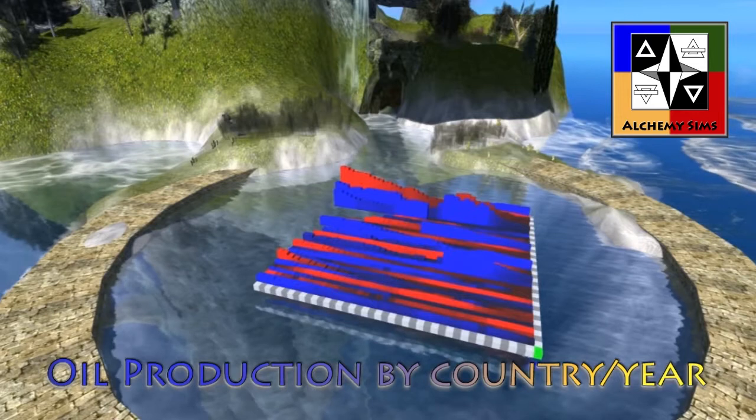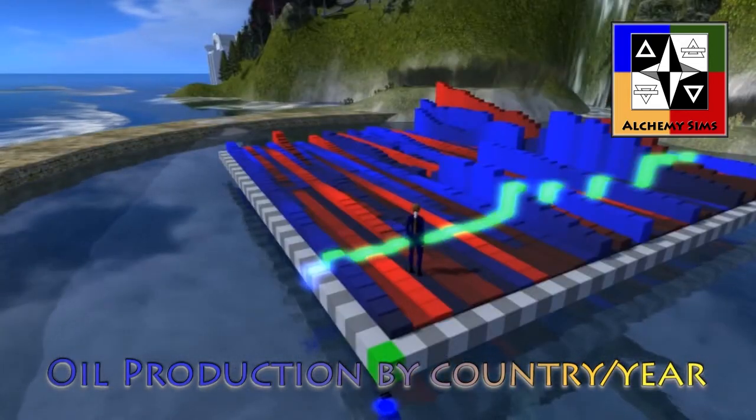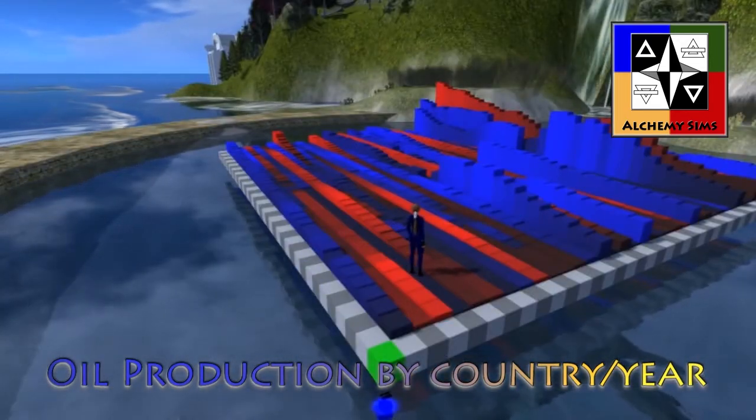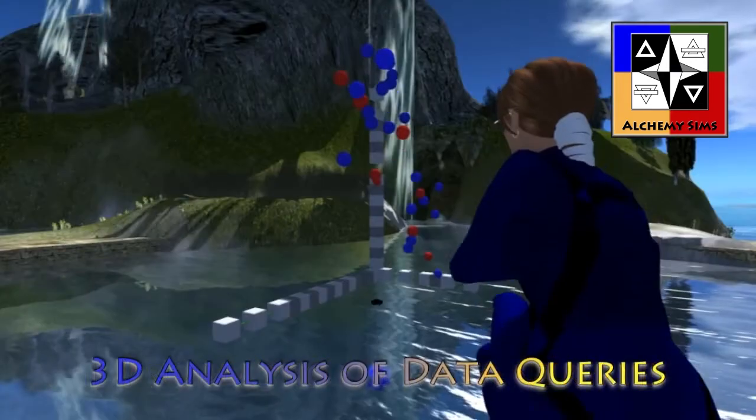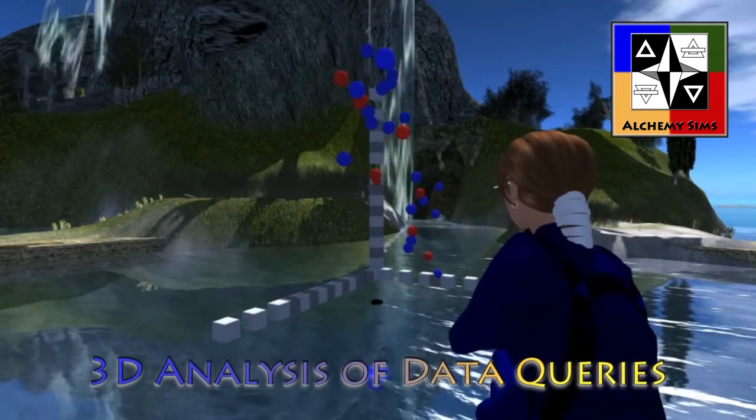Alchemy Sims and Green Phosphor show oil production on the vertical axis by various countries and years. You can walk through the data, selecting and comparing specific countries and time periods.